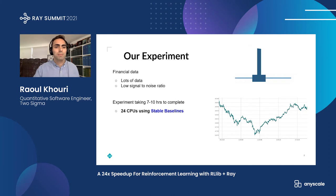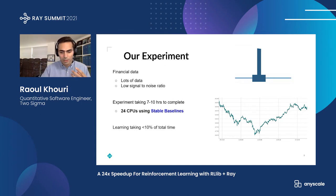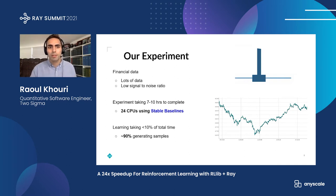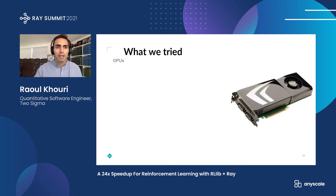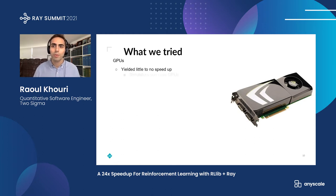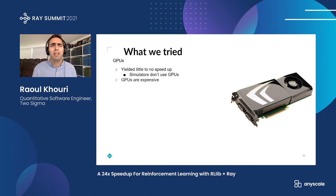So what did we try at first? Classic deep learning problem — we threw GPUs at it, that classic silver bullet. But it yielded little to no speedup. The simulators don't use GPUs, so throwing GPUs at the problem isn't going to speed up our simulators. It might have sped up the inference or learning step, but in our case the simulation — stepping through the environment — was really slowing us down. And on top of that, the GPUs were very expensive, so it was not worth using those GPU machines.